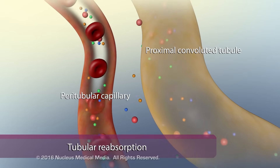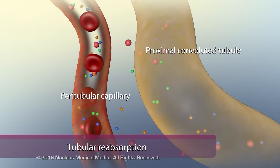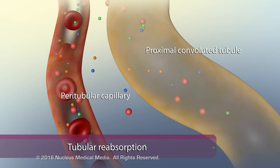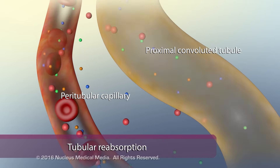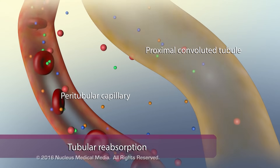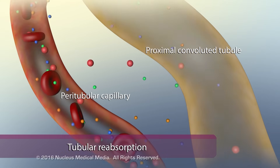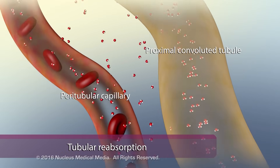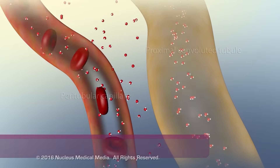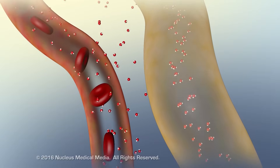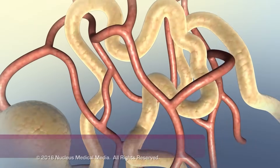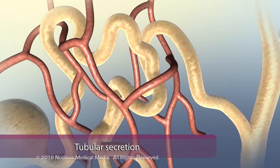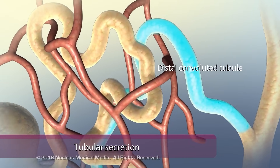Specifically, glucose, amino acids, and some sodium and calcium ions are reabsorbed by active transport. The peritubular capillary reabsorbs water through osmosis.